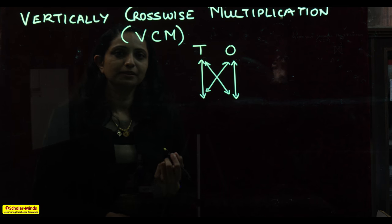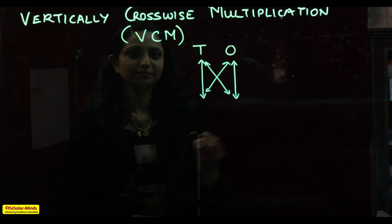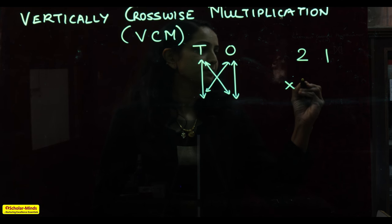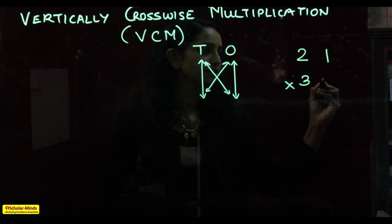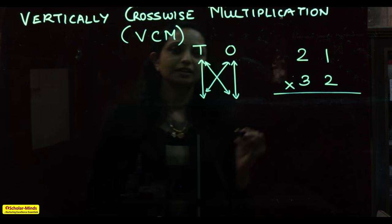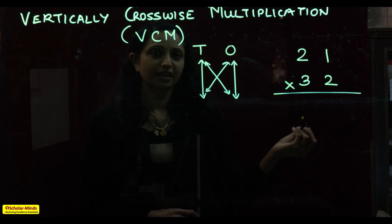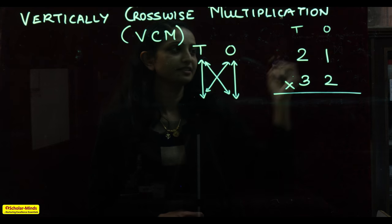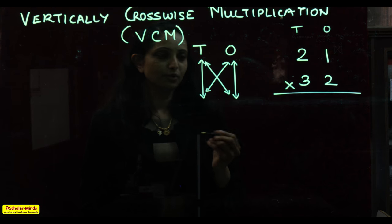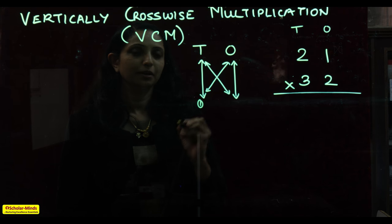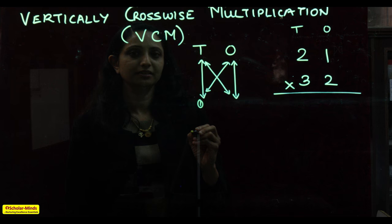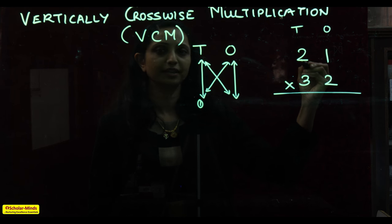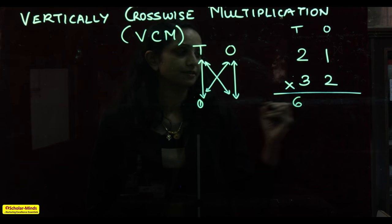To show you with an example, take 21 multiplied by 32. Identifying the ones and tens place — this is the ones place and this is the tens place. The first step is multiplying the digits in the tens place: the product of 2 and 3 gives you 6.